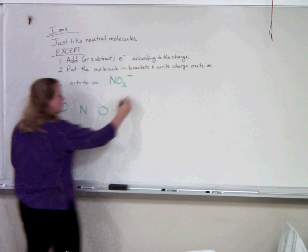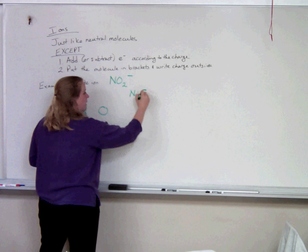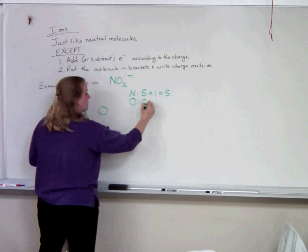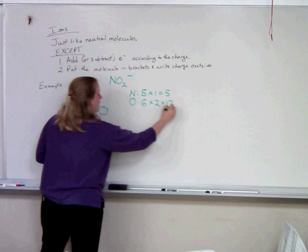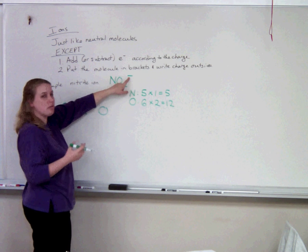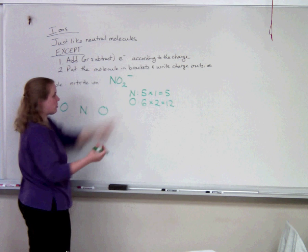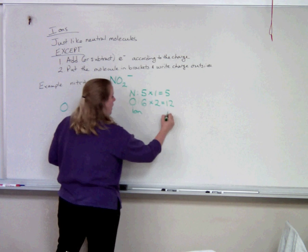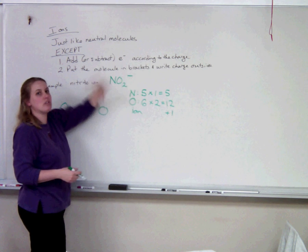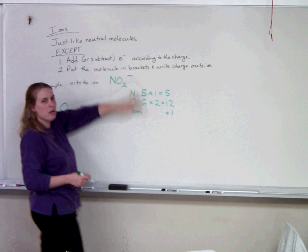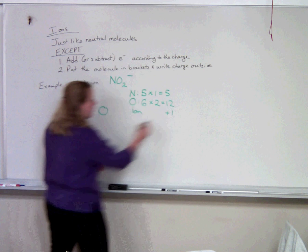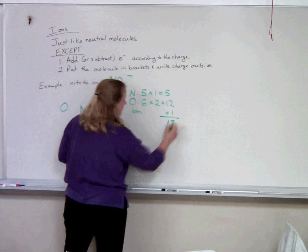Now we have to do our math. Nitrogen has 5 valence electrons and there's one of it. Oxygen has 6 valence electrons and there are two of those. But then this negative charge — what does it mean to be a negative ion? That means you've added one electron. So we're going to add another electron for it being a negative 1 ion. If this was a negative 2, we'd add two electrons. If this was a positive 1, we'd subtract an electron. So that gives us a total of 18 electrons.